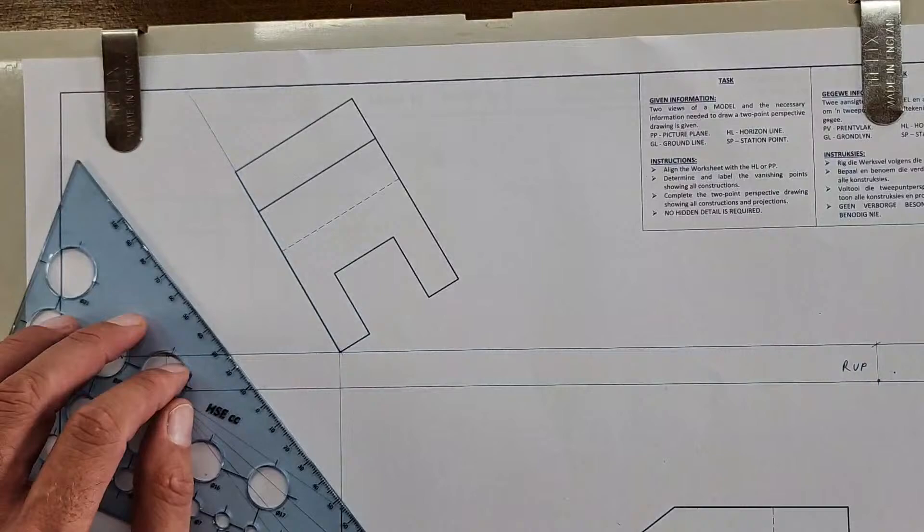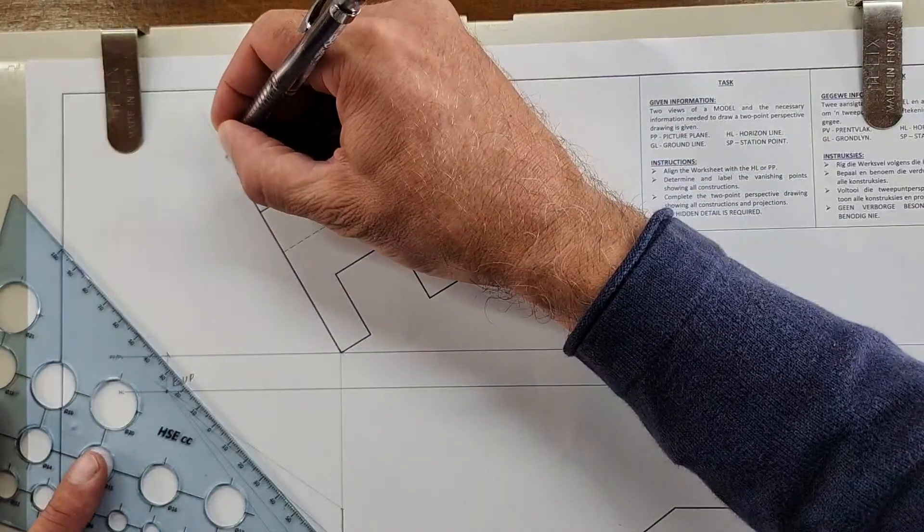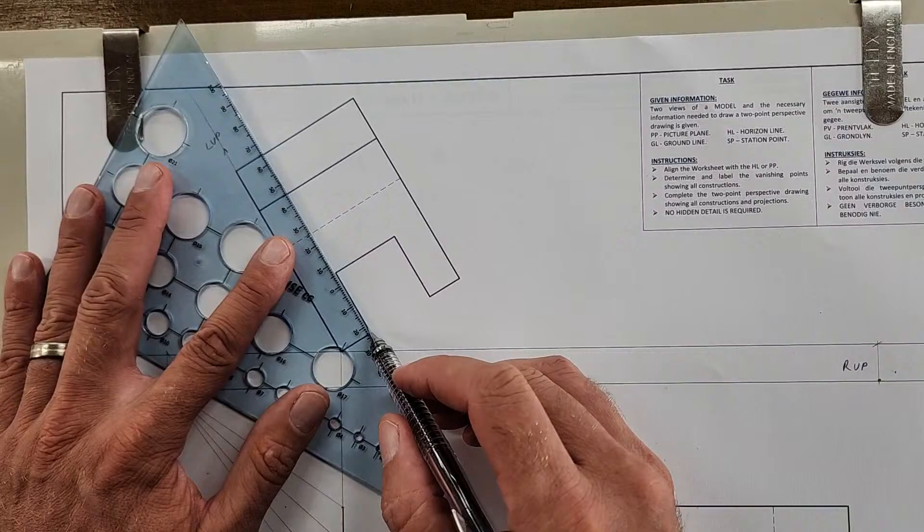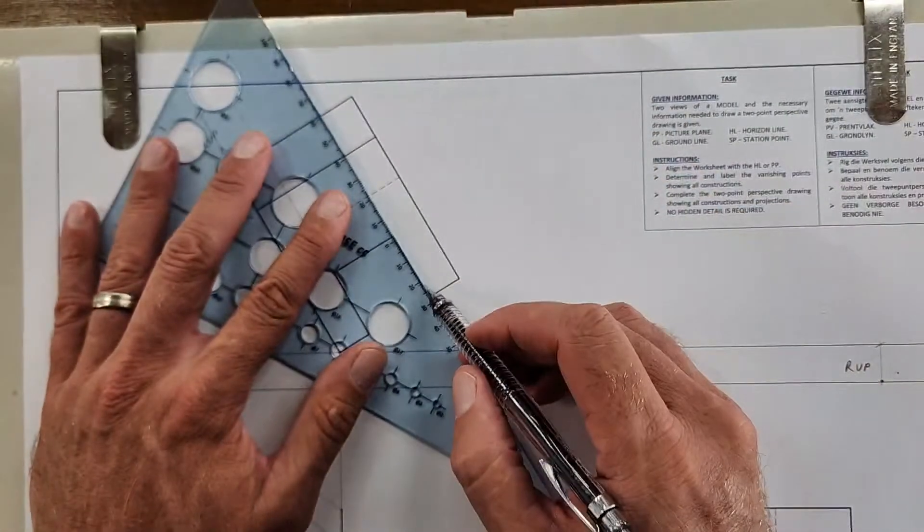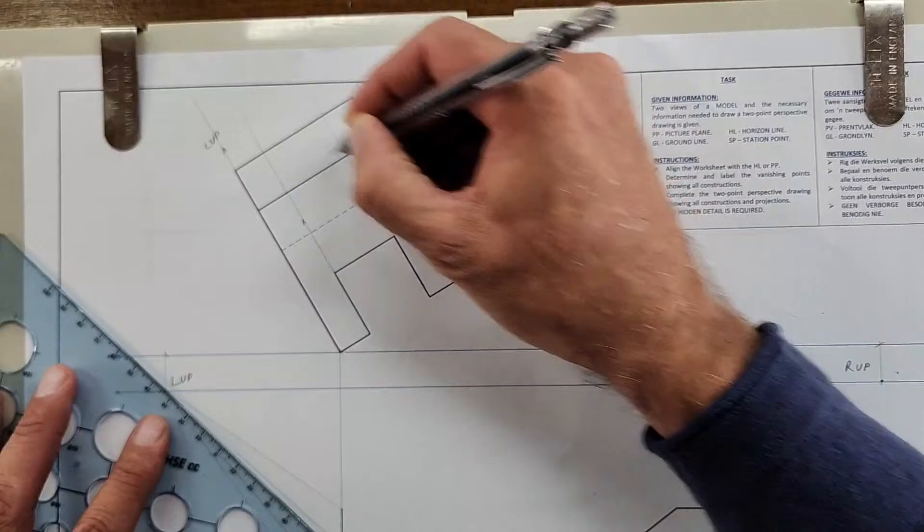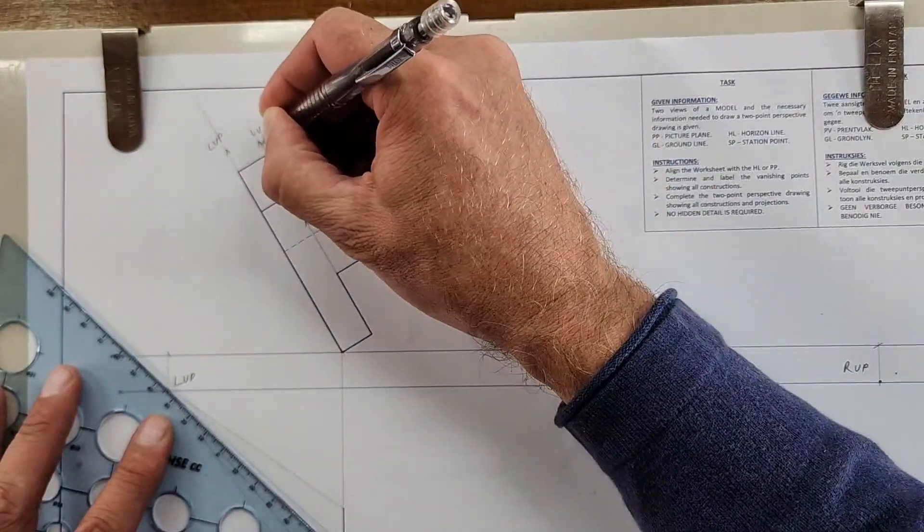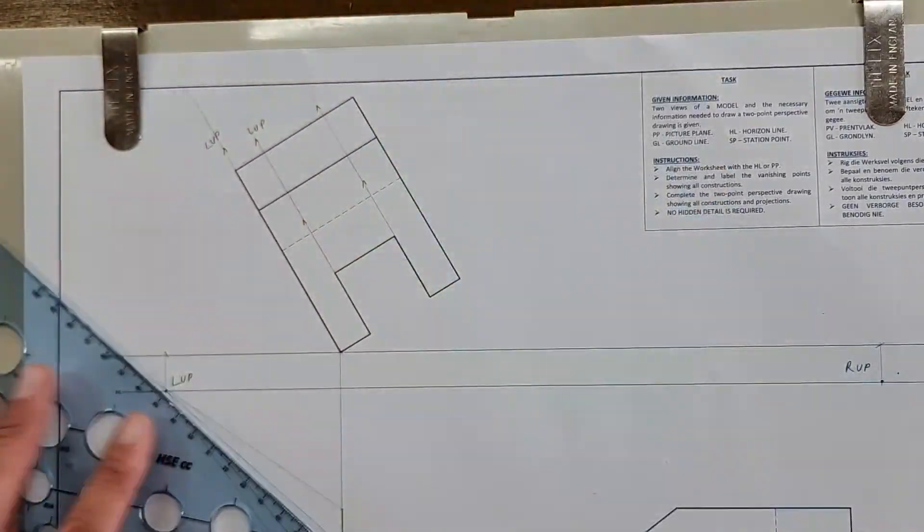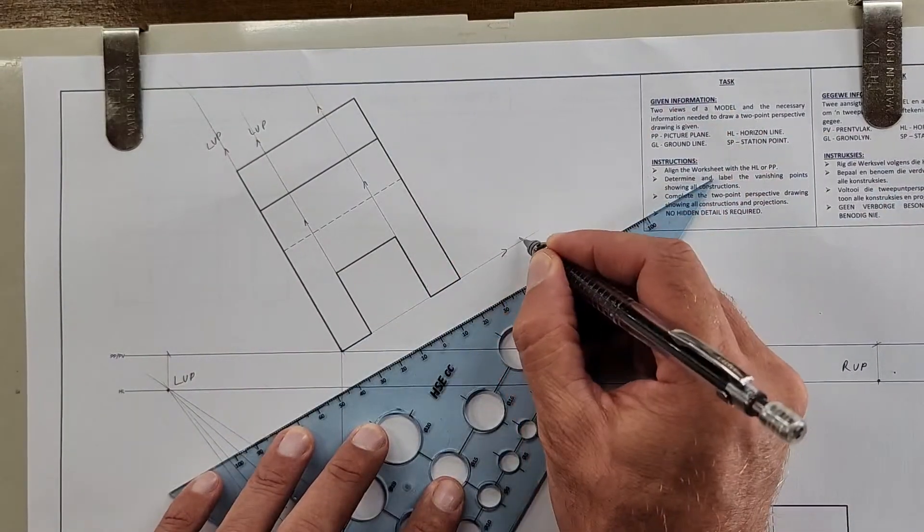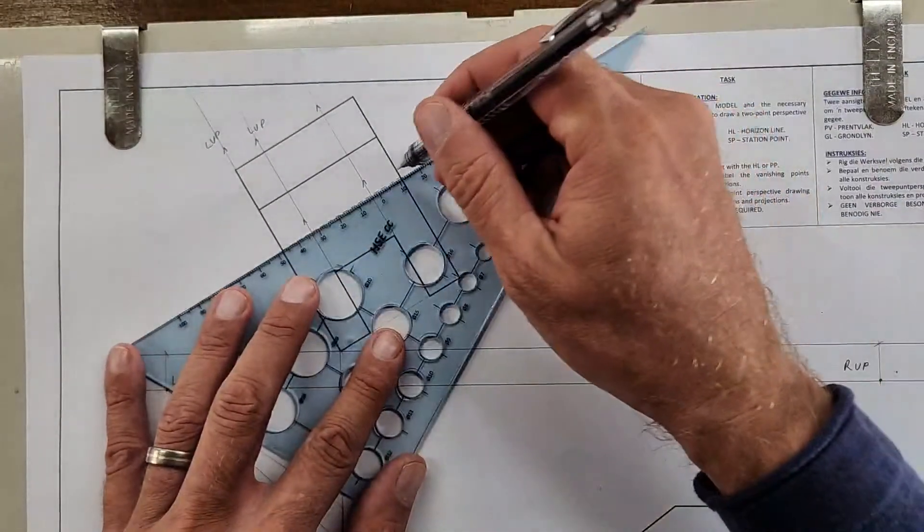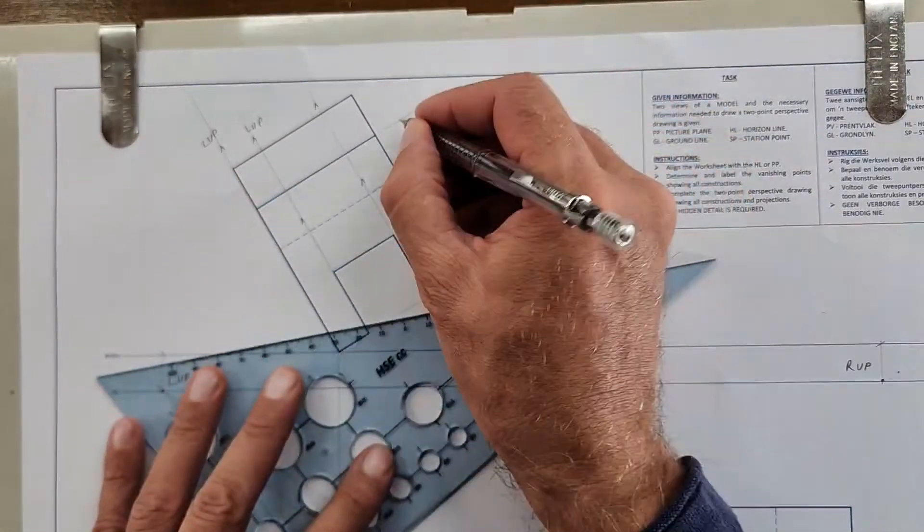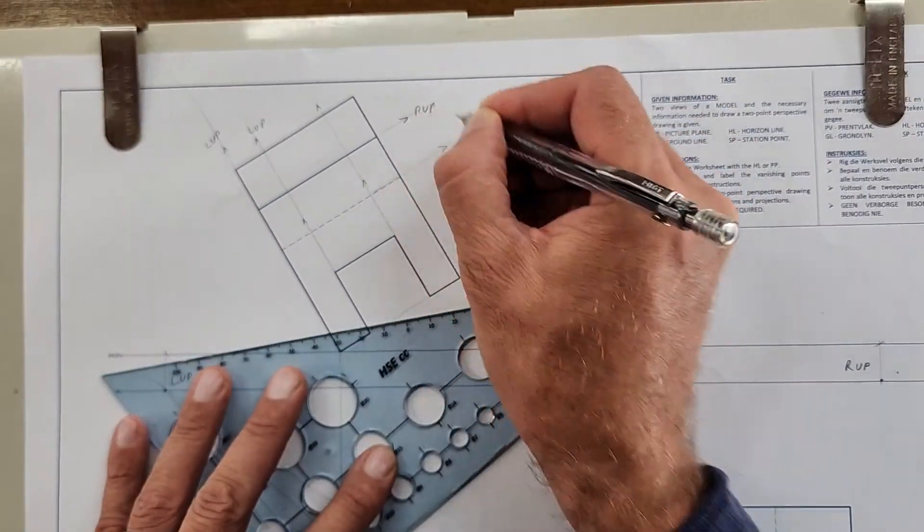These lines that I've just drawn here are construction lines that run right there, heading to the left vanishing point. A line heading in this direction is heading to the right vanishing point. All of these, if I would extend them, are heading to the right vanishing point.